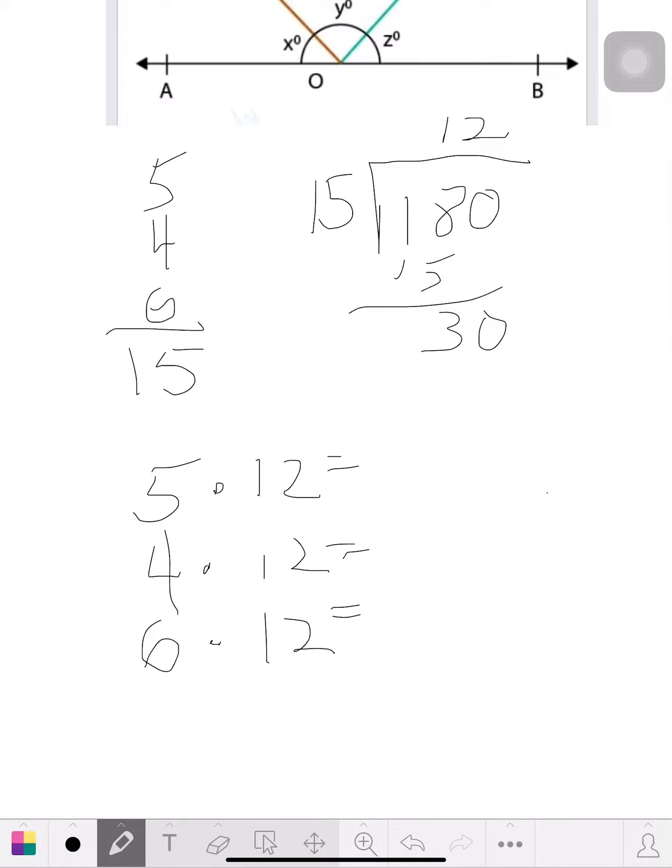So let's see, 5 times 12, 60. 4 times 12, 48. 6 times 12, 72.